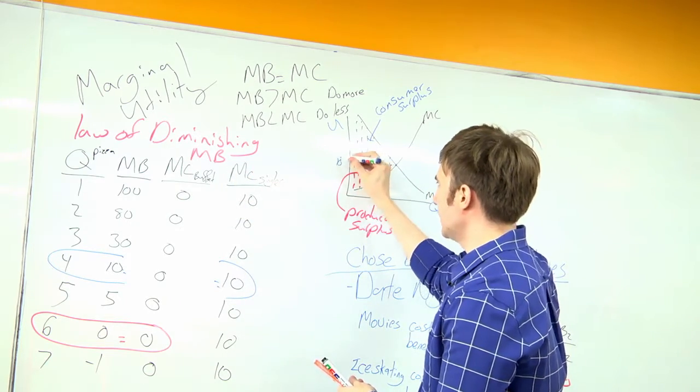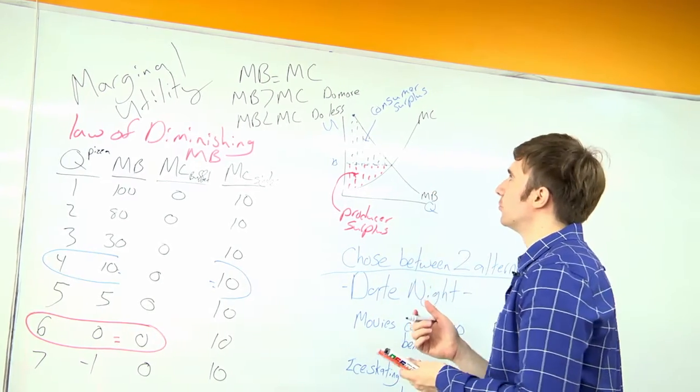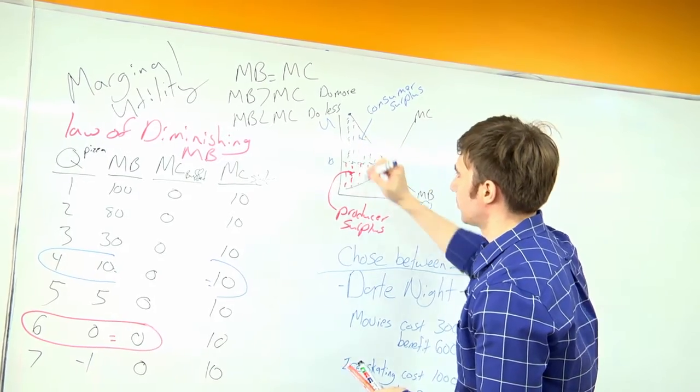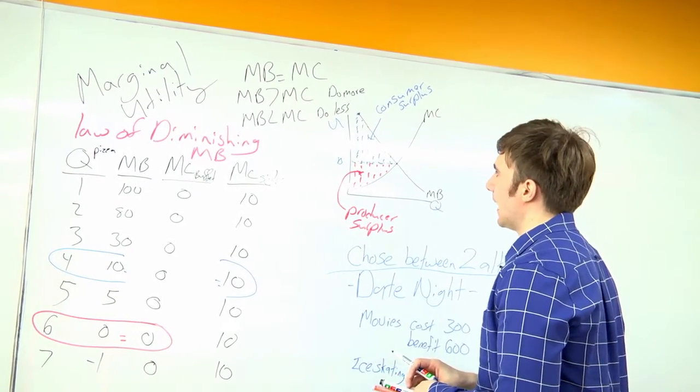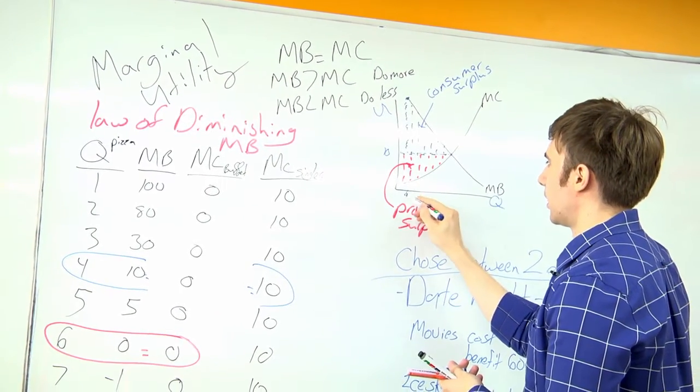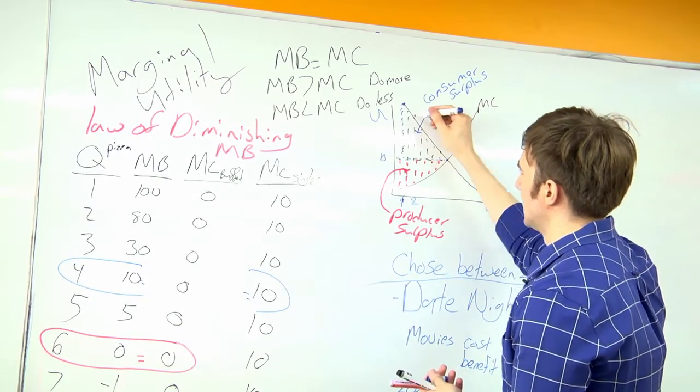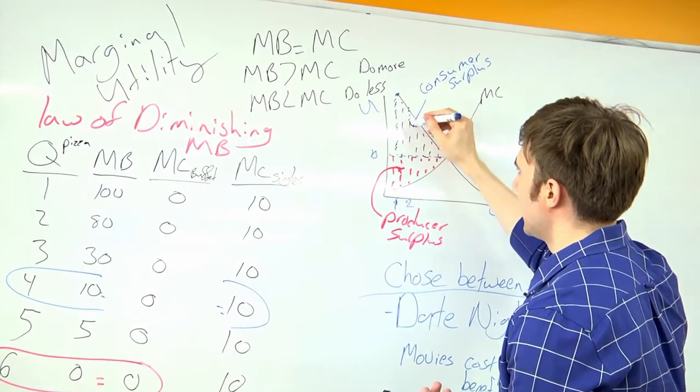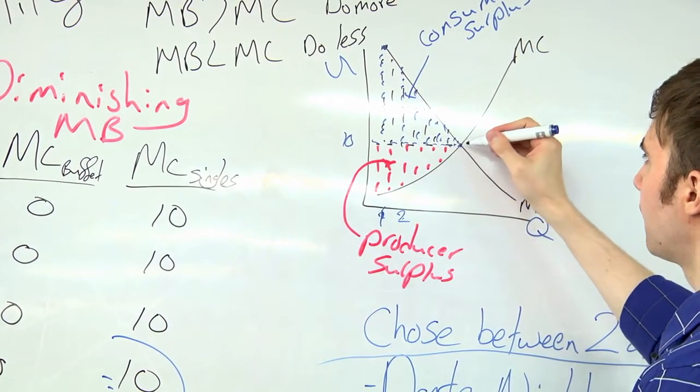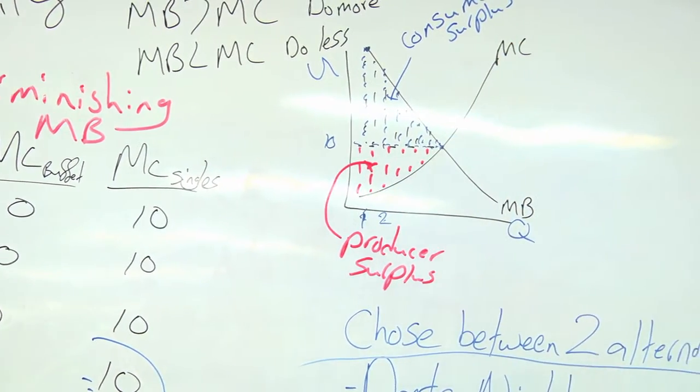Here you only had to pay ten, but you would have been willing to pay a hundred. Let's say this is ten. So you would have been willing to pay up here at a hundred. The difference between the two is your surplus. So you have ninety, a surplus of ninety. And for that second slice, you would have been willing to pay eighty, but you only had to pay ten, and so on, until finally your marginal benefit equals your marginal cost. All this area in the blue is going to be my consumer surplus.